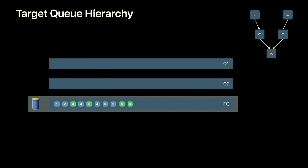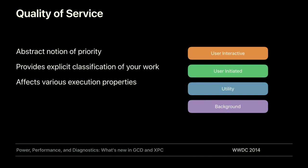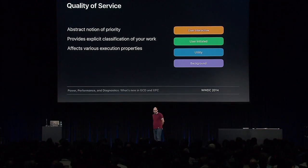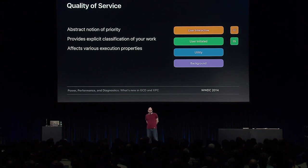The last concept we need today is quality of service. This is a fairly deep concept covered in detail in the Power, Performance and Diagnostics session from 2014. What we'll need today is really its abstract notion of priority. We have four quality of service classes: user interactive (UI), user initiated (IN), utility (UT), and background (BG) — the lowest priority.